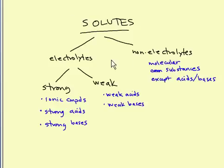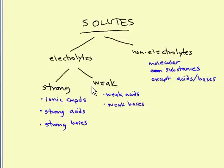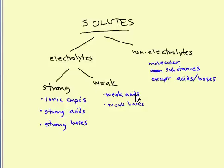All solutes can be classified as electrolytes or non-electrolytes. Electrolytes can be classified as strong or weak. Strong electrolytes are all ionic compounds that dissolve in water, all strong acids, and all strong bases. Weak electrolytes are weak acids and weak bases. Non-electrolytes are molecular substances except for acids and bases.